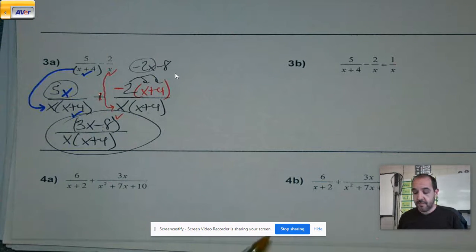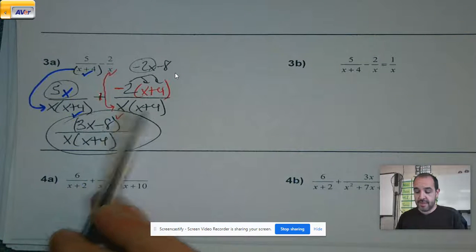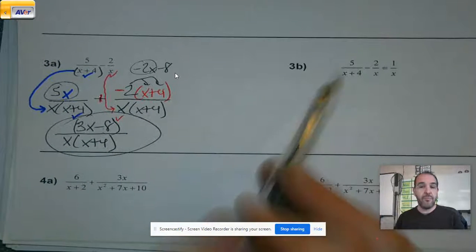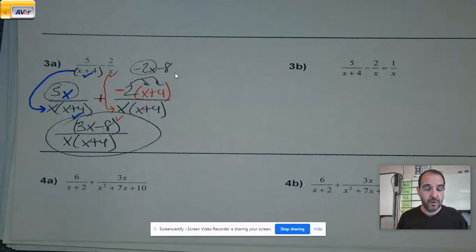Now, when you get to 3B, your common denominator will be the same, but you're going to be using that to multiply and wipe things out.